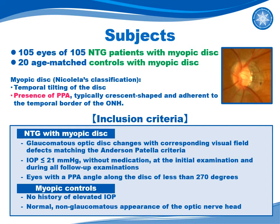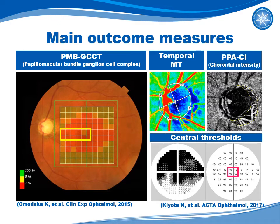The inclusion criteria were as described. We investigated the association between visual acuity-related papillomacular bundle or GCC thickness, temporal tissue blood flow MT measured by laser speckle flowgraphy, and vessel density of the choroidal layer in PPA measured with OCT angiography — now called PPA-CI — and central visual field sensitivity of the central four test points with the Humphrey field analyzer.